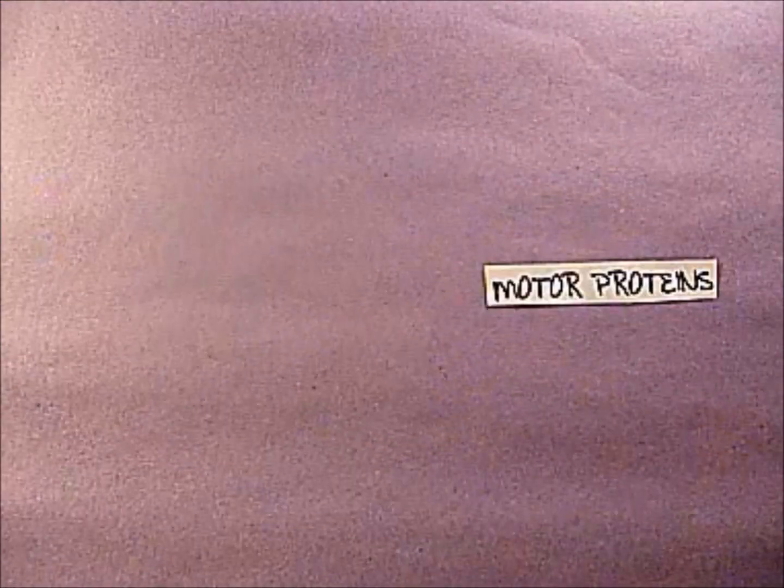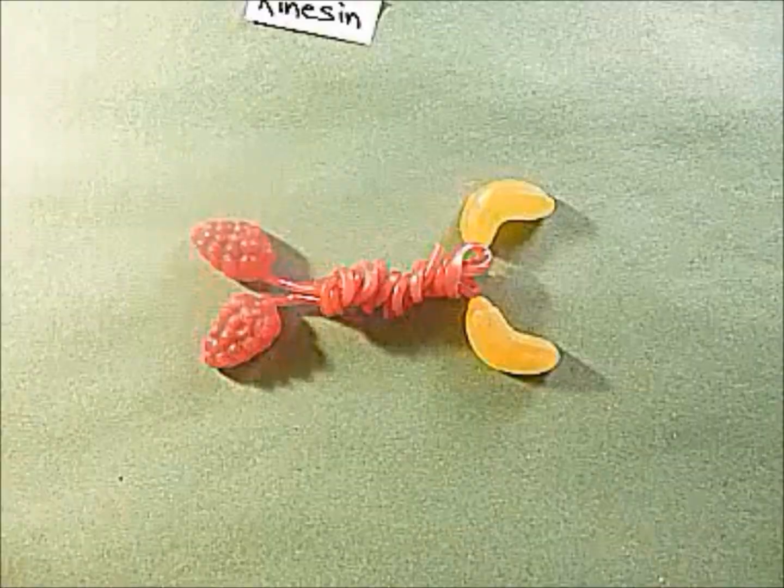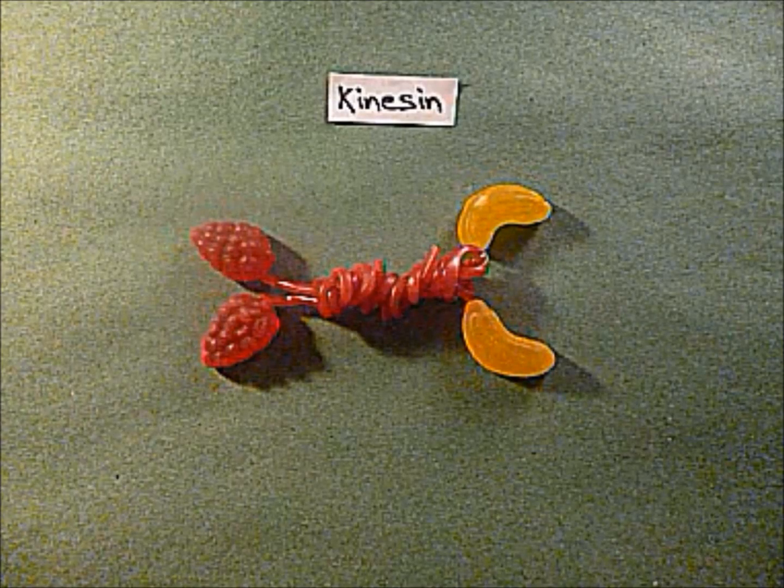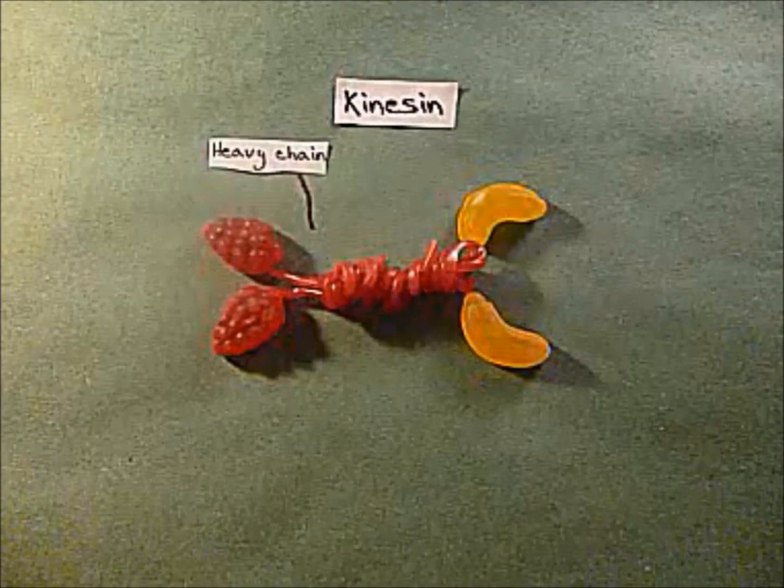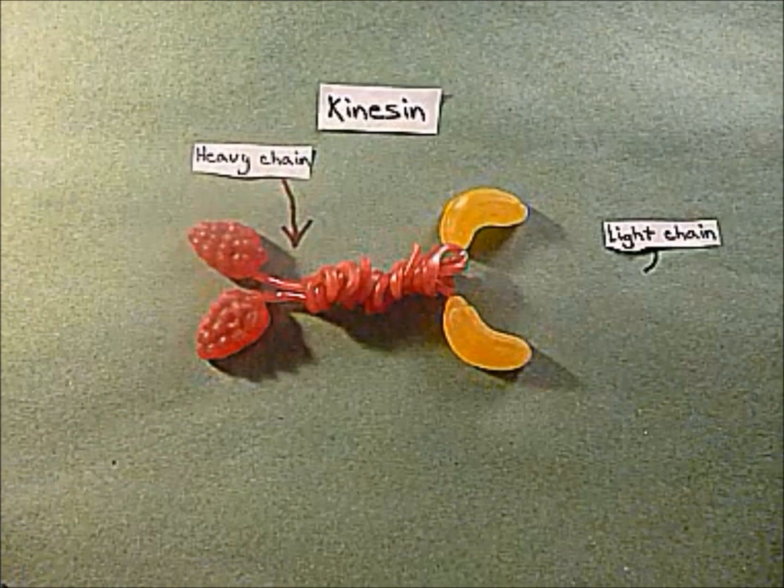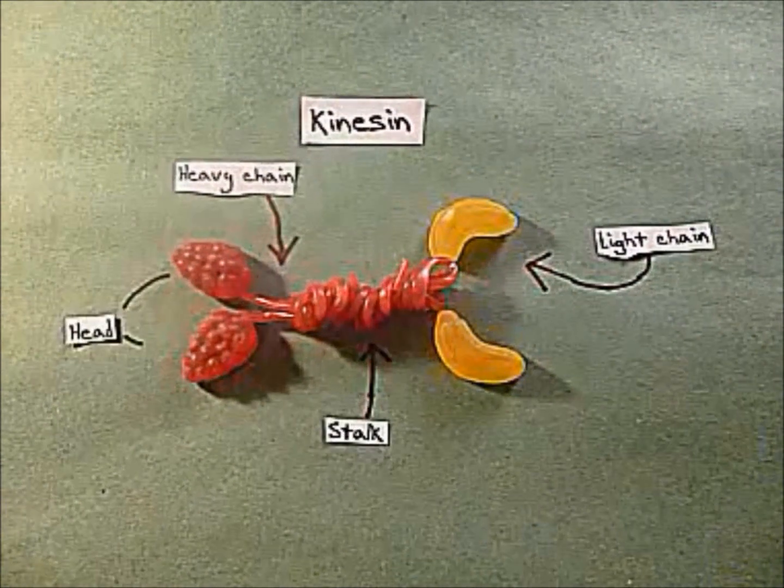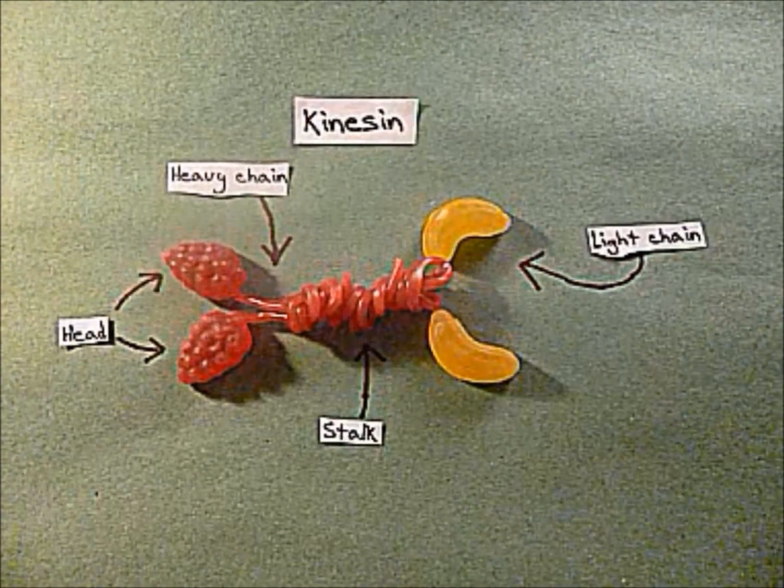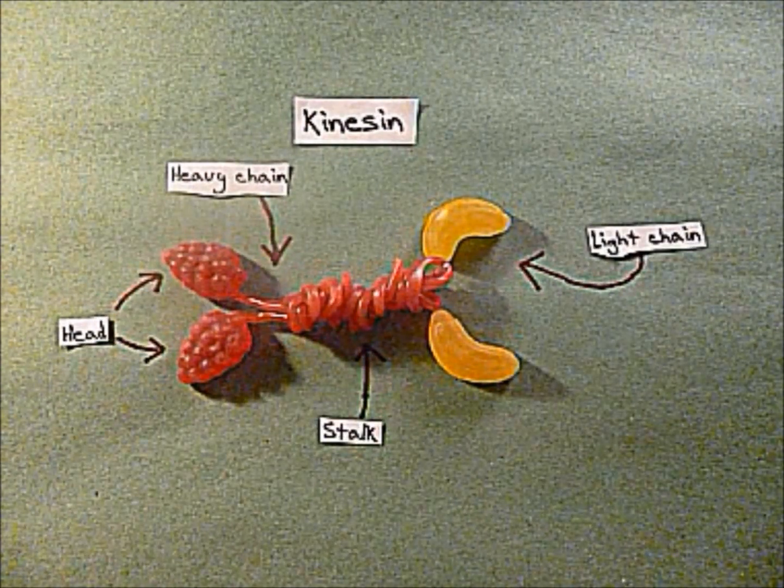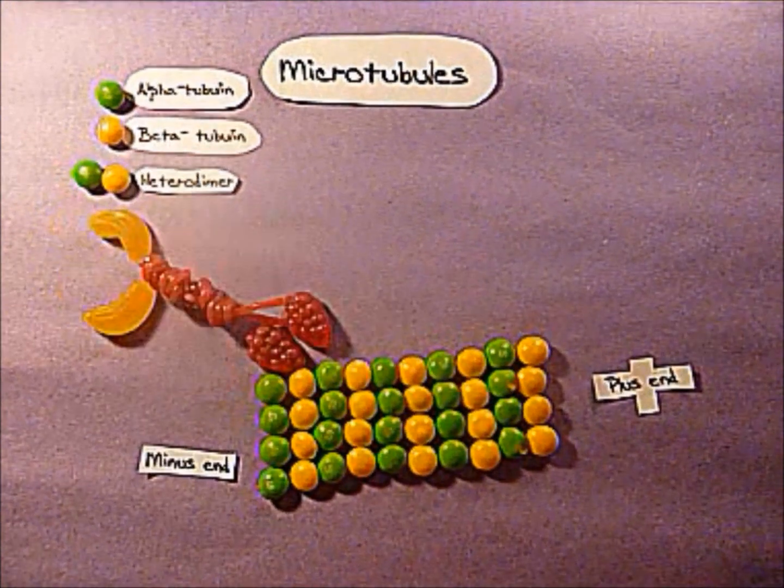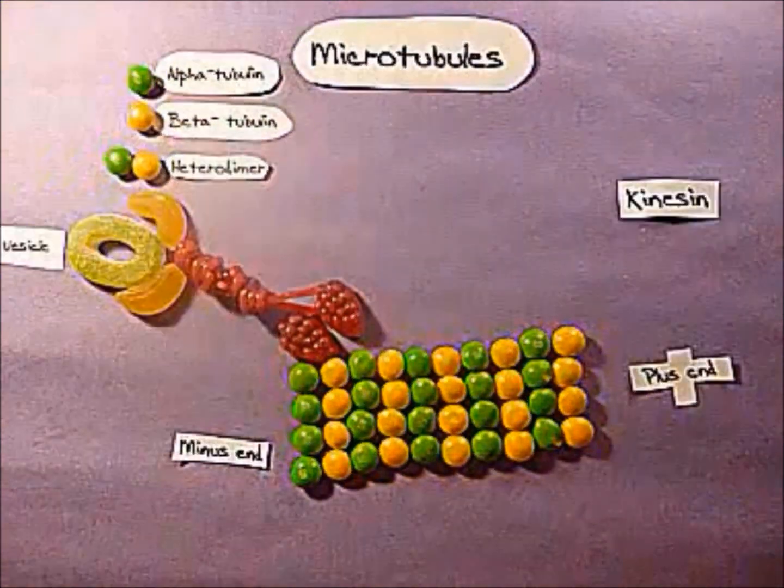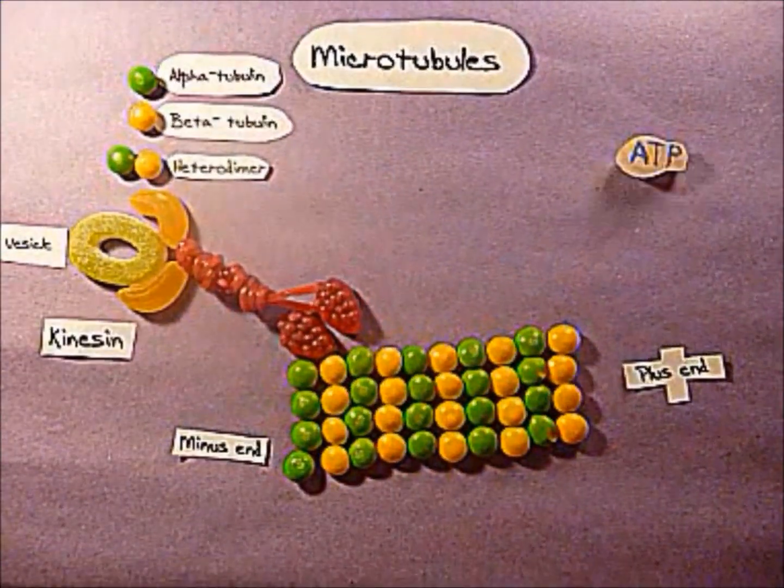Motor proteins move cell cargo along microtubules. Kinesin has two light and two heavy chains which are wrapped around each other. The globular head of the heavy chain binds ATP for motility, and the tail binds cargo. Kinesin moves along a single protofilament to the positive end at a rate proportional to the concentration of ATP in the cell.